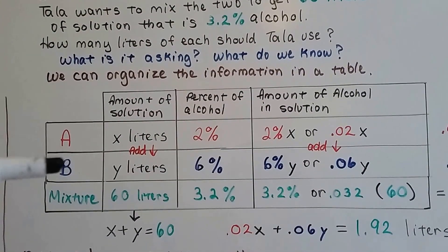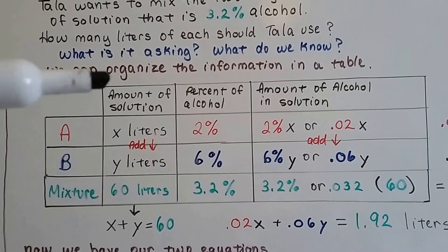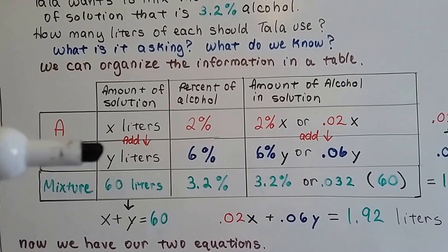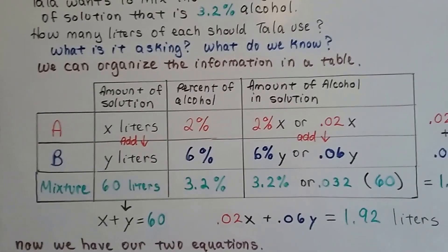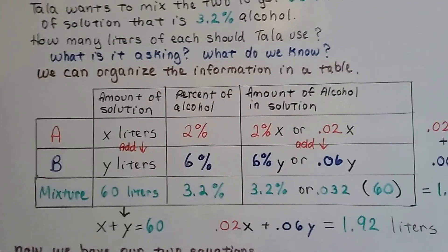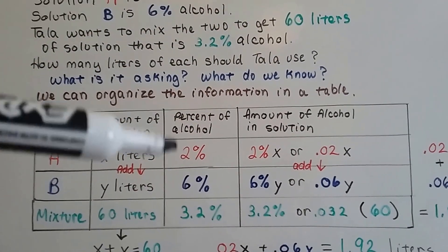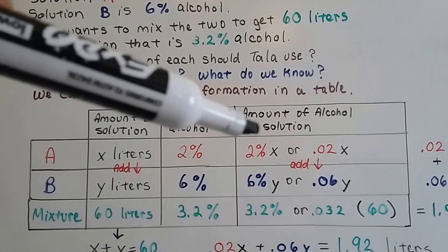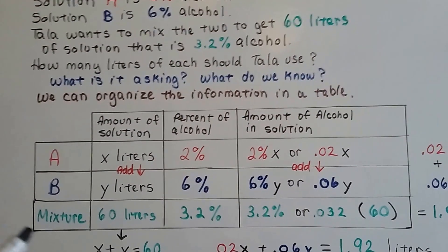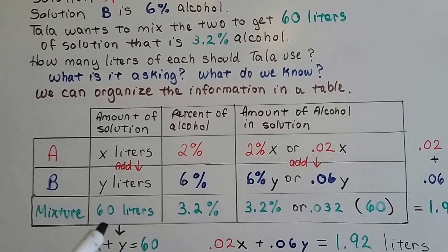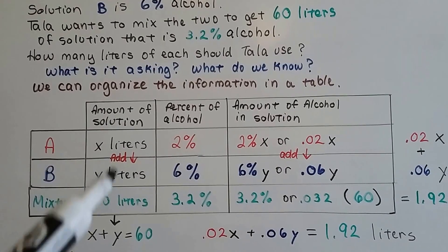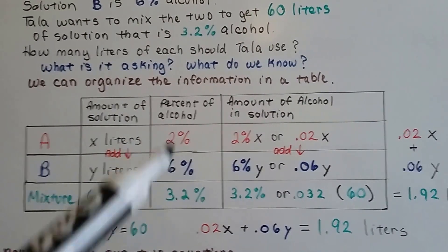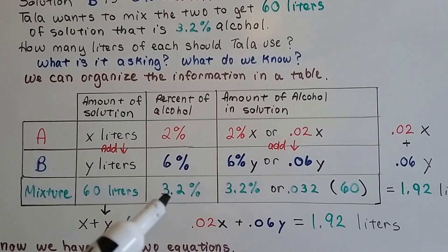We put A here, B here in the mixture. We put the amount of the solution. A is X liters. We don't know how many. B is Y liters. We don't know how many of those either. We put the percent of alcohol. We know that A is 2%. We know that B is 6%. And, the amount of the alcohol in the solution. And, down here for the mixture, we put what we know. We know that these two together, added together, have to equal 60 liters. We also know that these two added together have to equal 3.2%.